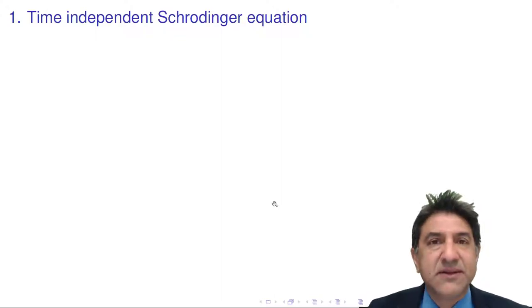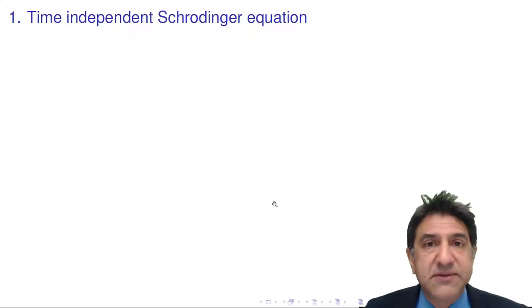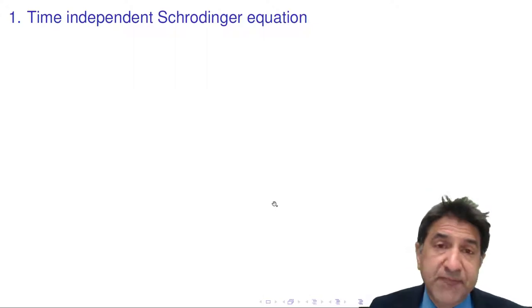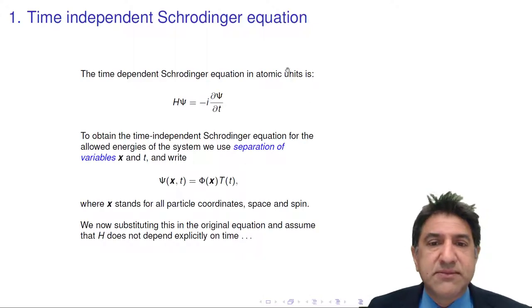So as we said before, in quantum mechanics, we need a wave function to describe how the properties of the system evolve in time. And that equation is time-dependent. It depends on time. But most of the applications that we do involve the ground states or excited states of molecules or systems, and they don't change in time very quickly. So how do we get that time-independent Schrodinger equation?